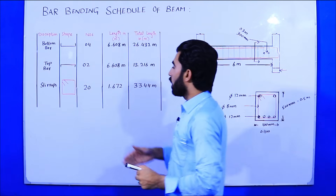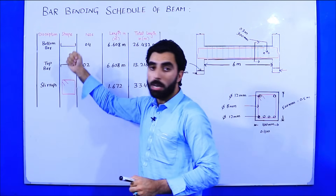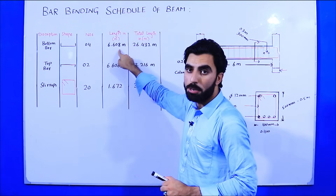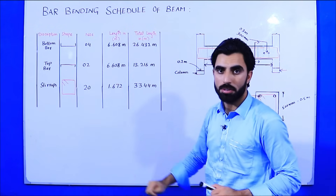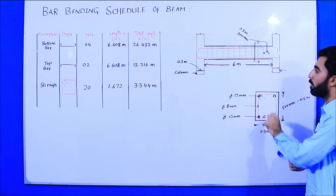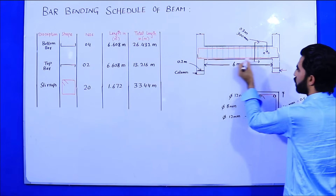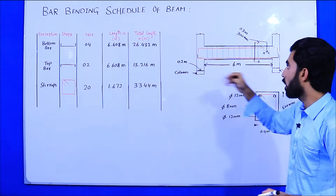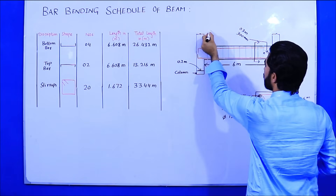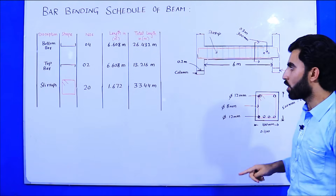We should prepare five columns in the bar bending schedule: the first is description of the bar, the second is shape of the steel bar because we have different shapes for beam, column and slab, the third is numbers, the fourth is length in meters, and the fifth is total length in meters. This video will be a little long but it's important, so you must watch from start to end.